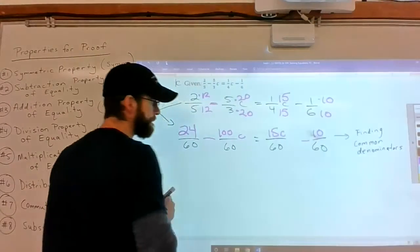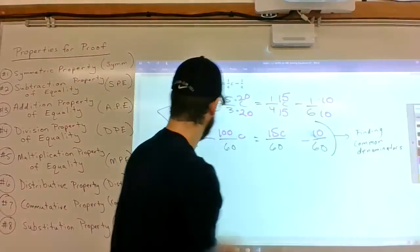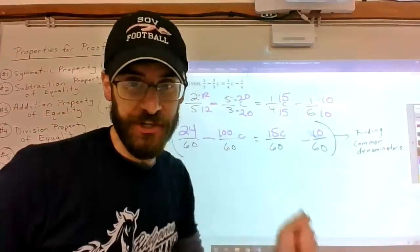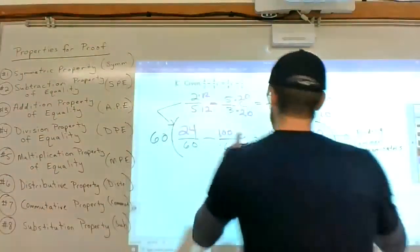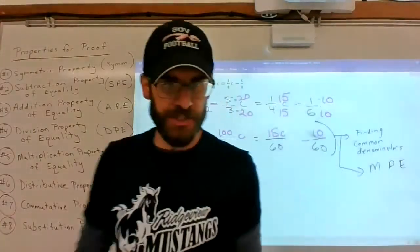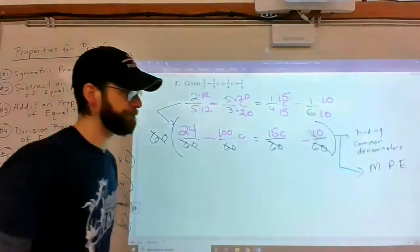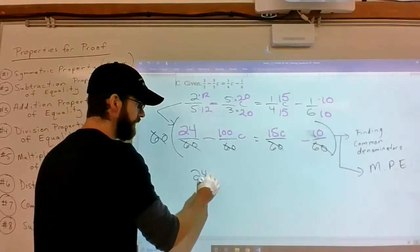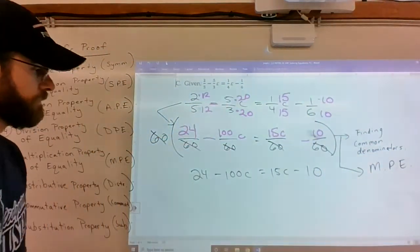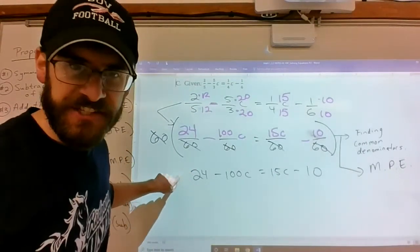Now this is the point at which you say, if I multiply both sides by the denominator, 60, it eliminates the denominator. It ditches it right away. So by multiplying by 60, you use the multiplication property of equality, and then this cross-cancels with everybody using the distributive property. So it leaves you with 24 minus 100C equals 15C minus 10. That's kind of like, I use the multiplication property of equality and the distributive property to get this statement to show up.